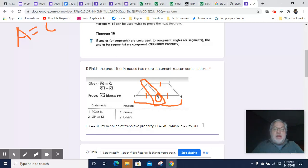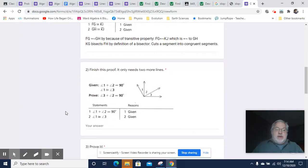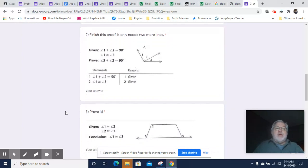Then we can go on and have our last line, which is simply that KG bisects FH by definition of a bisector. That's a segment into congruent segments. So there you go on that one.